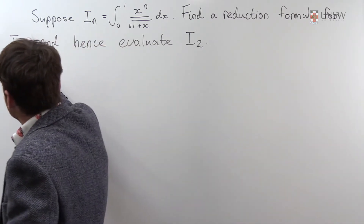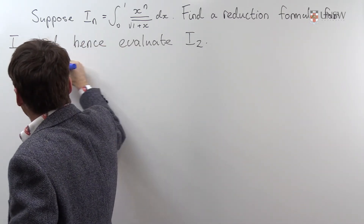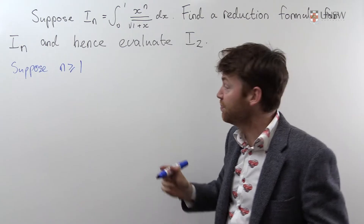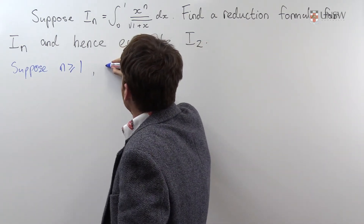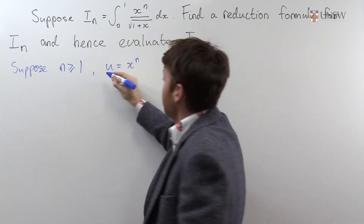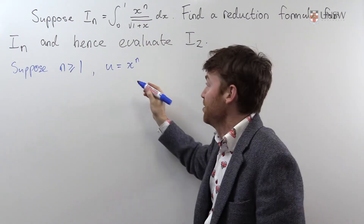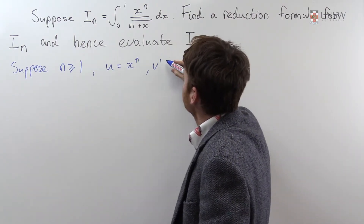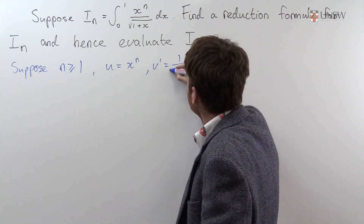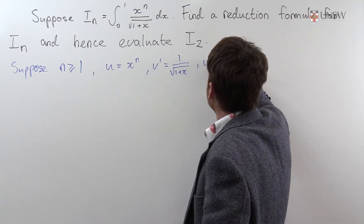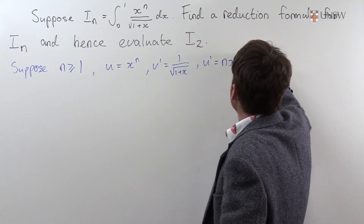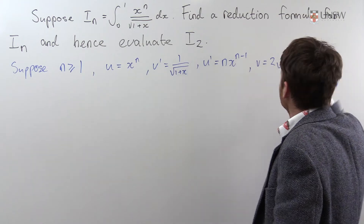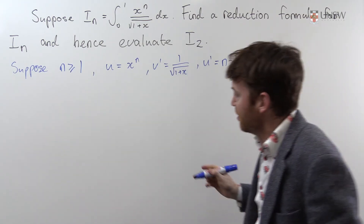We will first of all suppose n is greater than or equal to 1, so that n is typically not 0. I'll let u equal to x to the n — so the thing I differentiate in my integration by parts is x to the n. My v dash, the thing I integrate, will be everything else: 1 on square root of 1 plus x. That means u dash equals n x to the n minus 1, and v equals 2 root 1 plus x. I have all the ingredients for integration by parts.